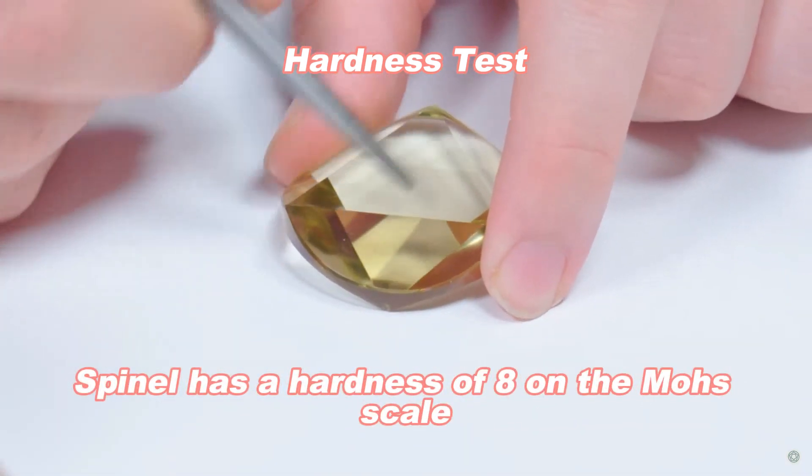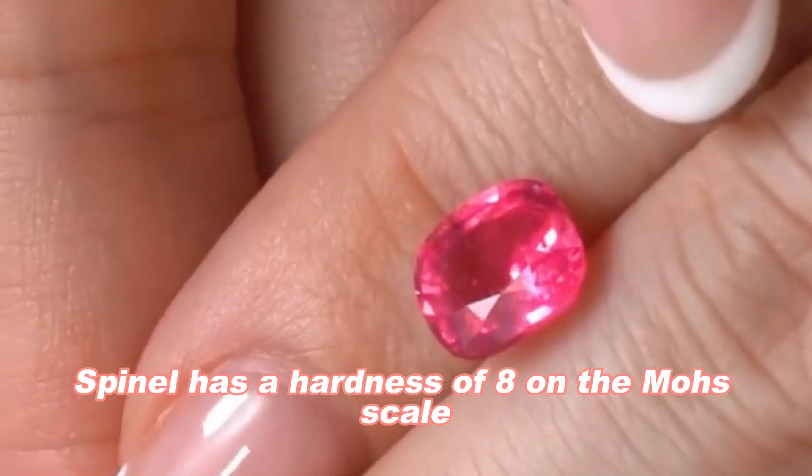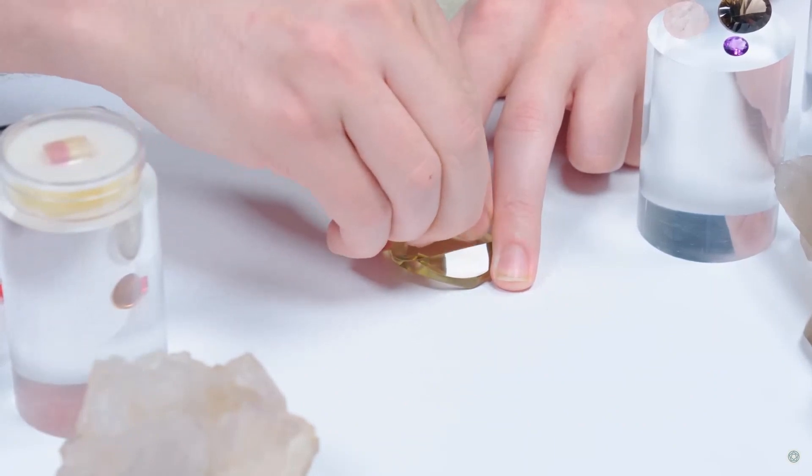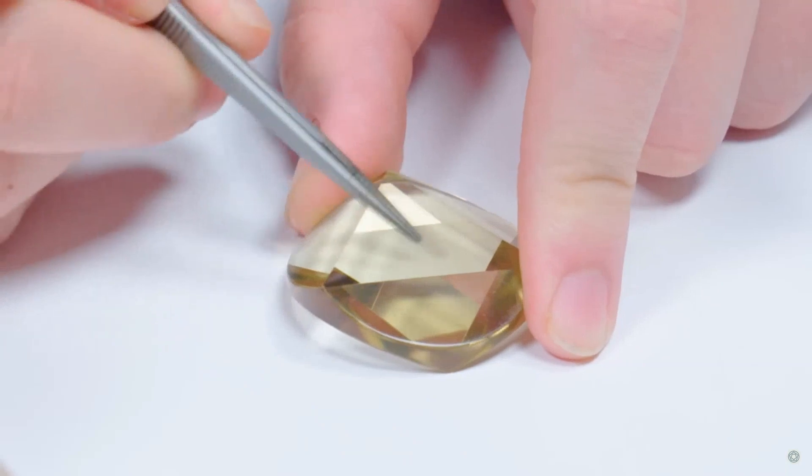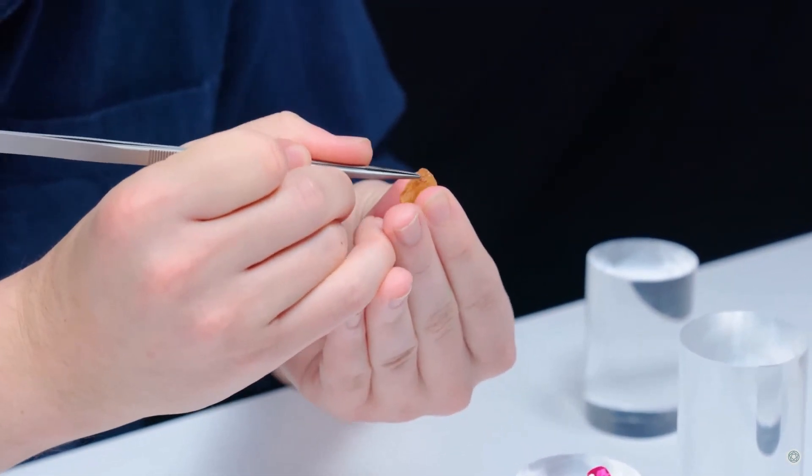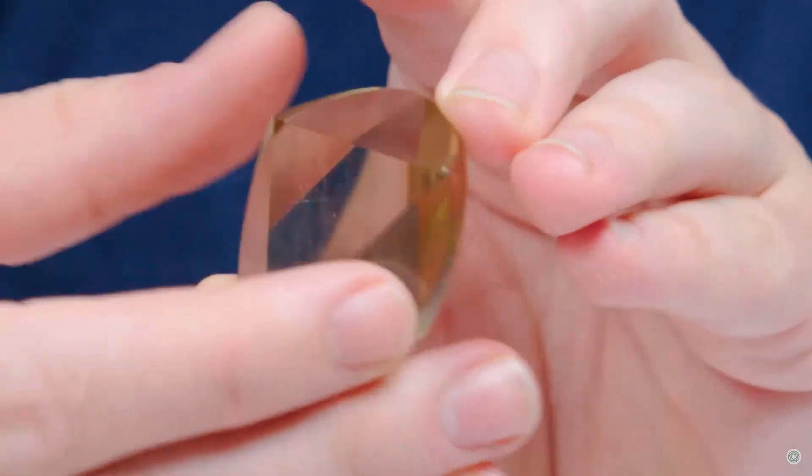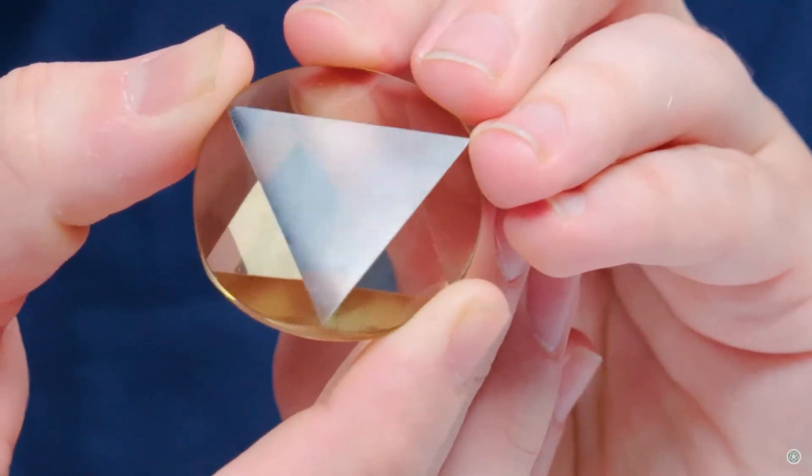Hardness Test: Spinel has a hardness of 8 on the Mohs scale, making it relatively hard. You can use common objects with known hardness, e.g., a steel nail, which has a hardness of around 5.5, to perform a scratch test. If the spinel can scratch the object, it is likely spinel.